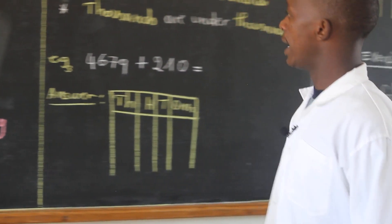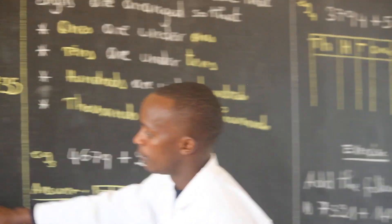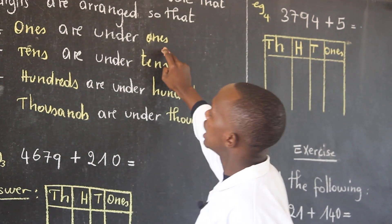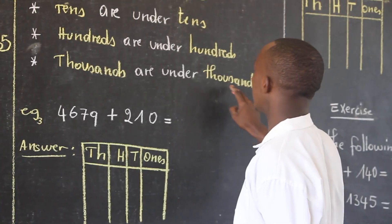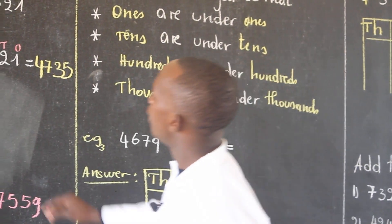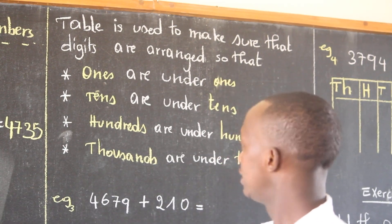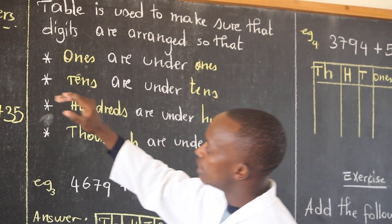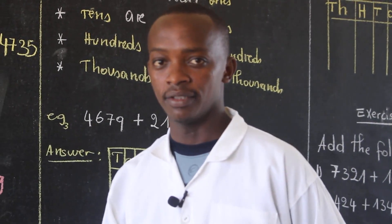Now dear friends of mine, why do we need to use the place value table while we are adding numbers? We use the place value table to ensure that digits are arranged so ones are under ones, tens are under tens, hundreds are under hundreds, and finally thousands are under thousands. When you do not use the place value table, there is a risk of arranging digits incorrectly, so ones will not be under ones and you will get the wrong answer. That is why we need to use the place value table while adding digits.